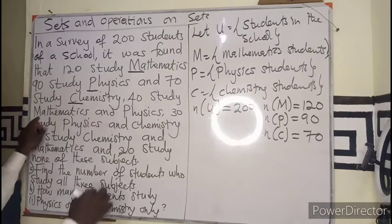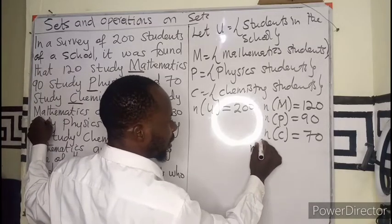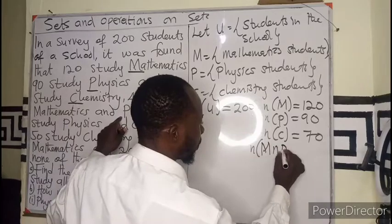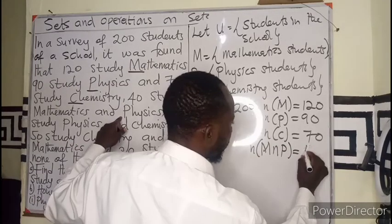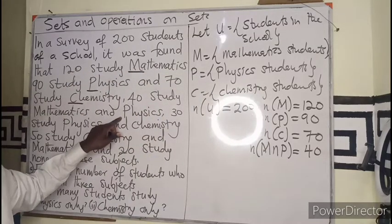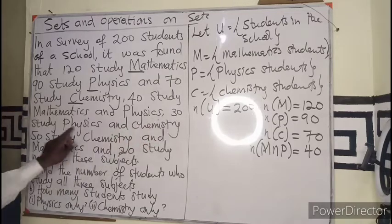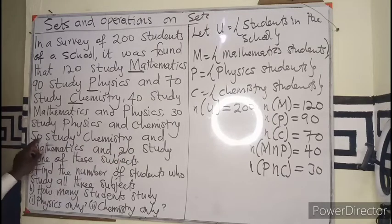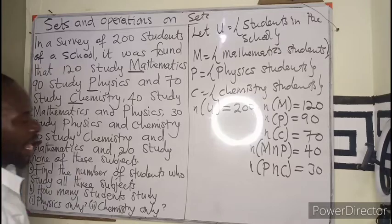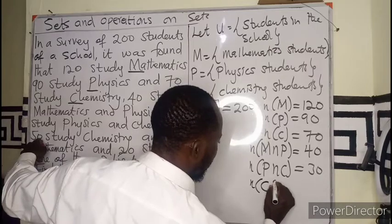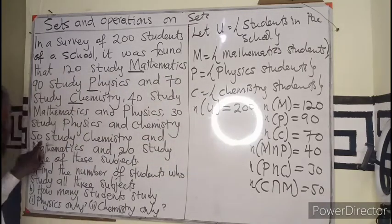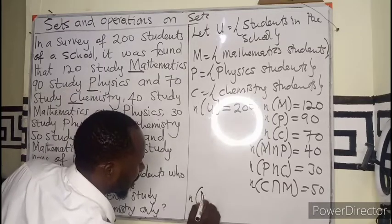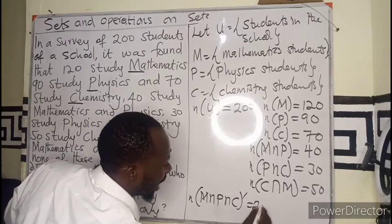40 study Mathematics and Physics — 'and' means intersection — so M intersection P equals 40. 30 study Physics and Chemistry, so P intersection C equals 30. 50 study Chemistry and Mathematics, so C intersection M equals 50. The complement — those who study none — is 20. So M union P union C complement equals 20.